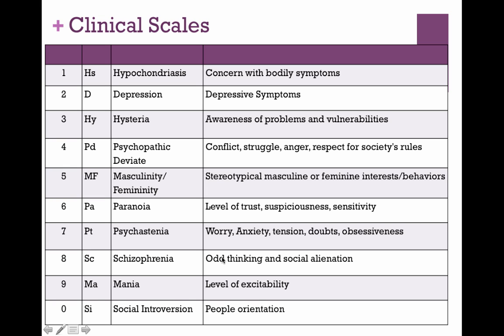Scale four is psychopathic deviate. These people have low respect for society's rules and authority. They're high in conflict, may be impatient or impulsive, show anger, and may be pretty insensitive to others. If you have a high four, you may be seen as pretty self-centered.